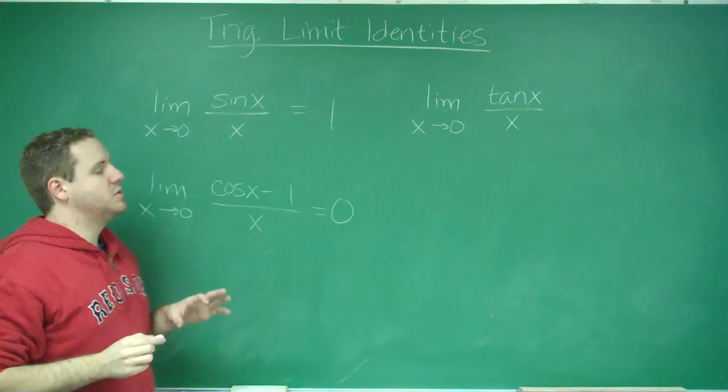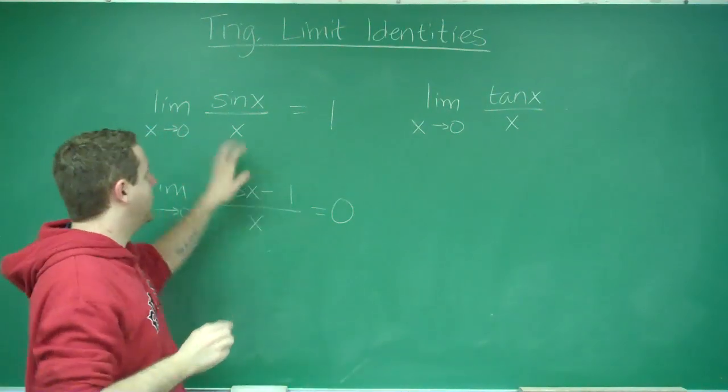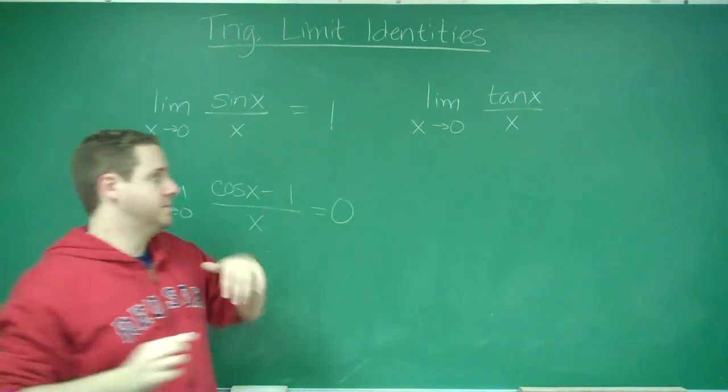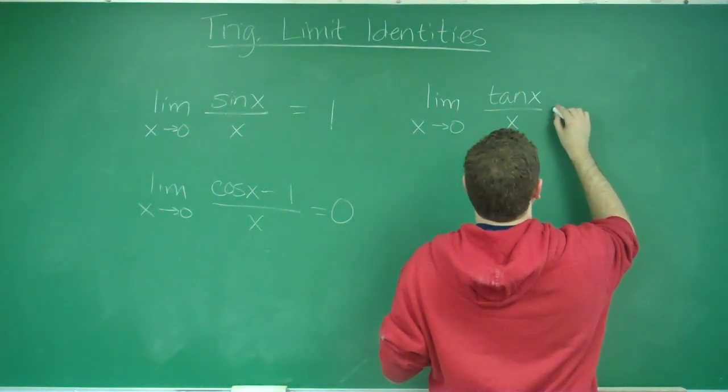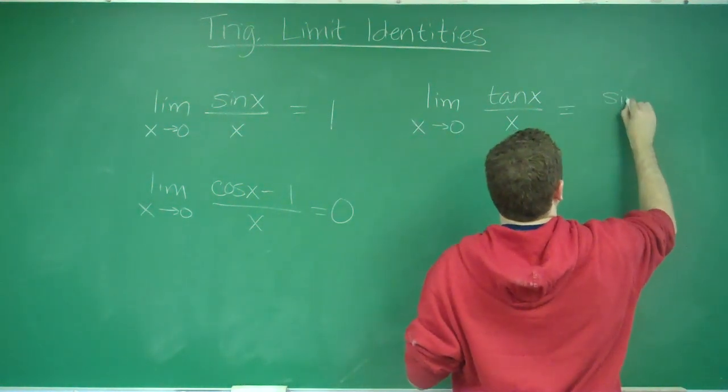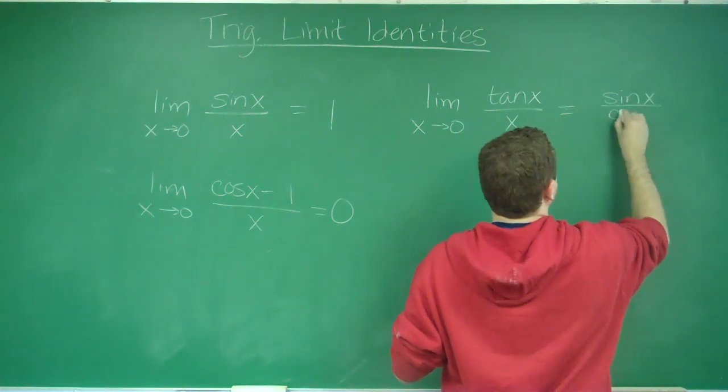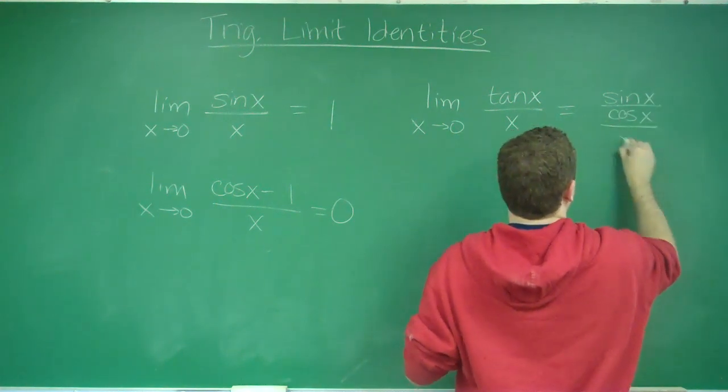Well, if you split tan into sine and cosine, we can get this in the function. So, tangent is sine x over cosine x. So, we have that over x.